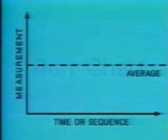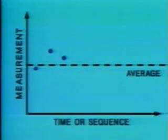A run chart is a line graph employed to monitor a system to see whether or not the long range average is changing.